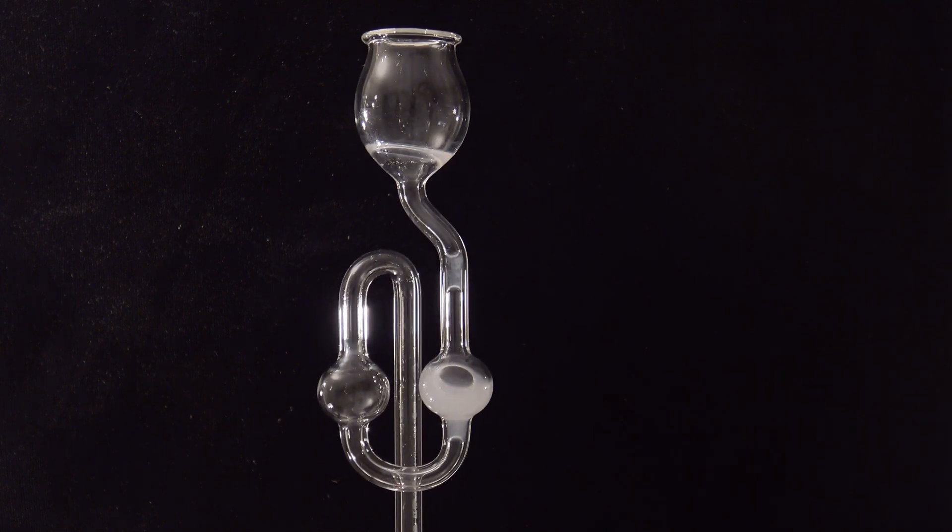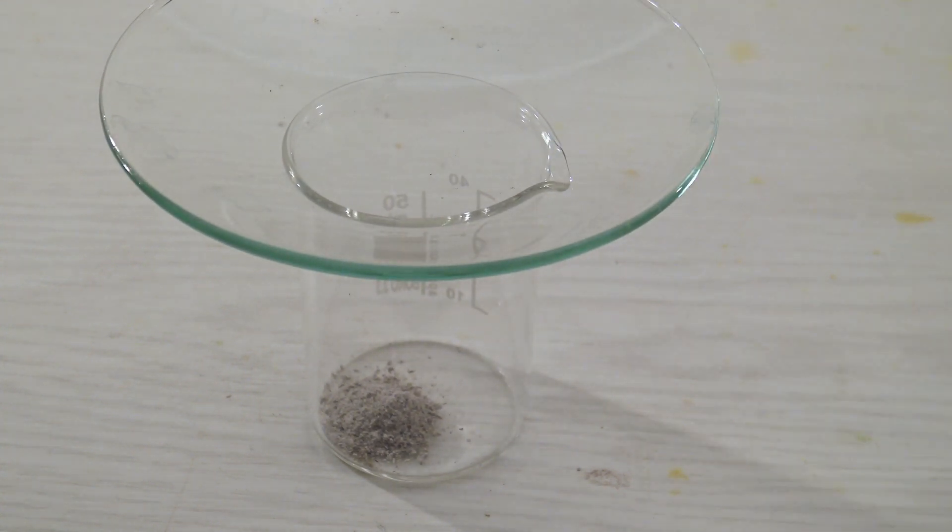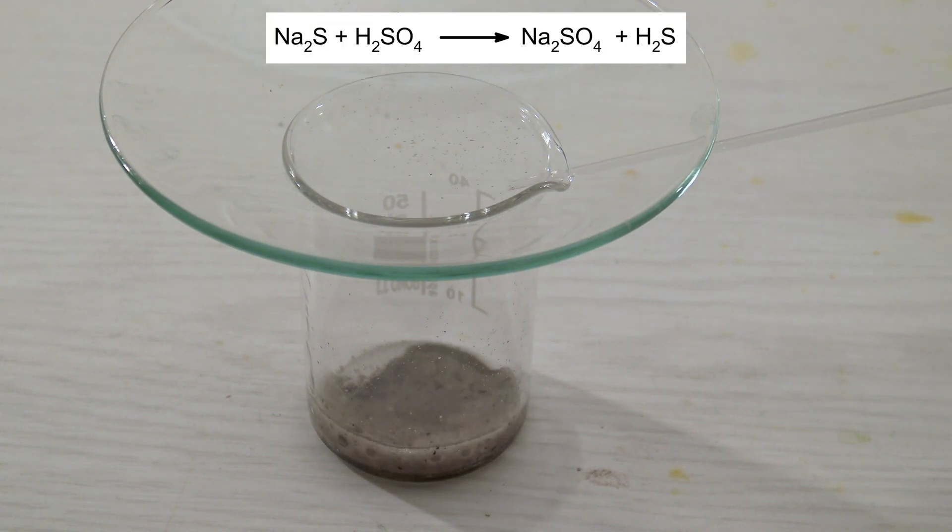When adding the acid, a slight smell of hydrogen sulfide was noticeable. So a watch glass was put on top of the beaker before adding the acid. Then 10% sulfuric acid was added. Hydrogen sulfide is formed when sulfides react with acid. As an example, sodium sulfide is used in the equation.